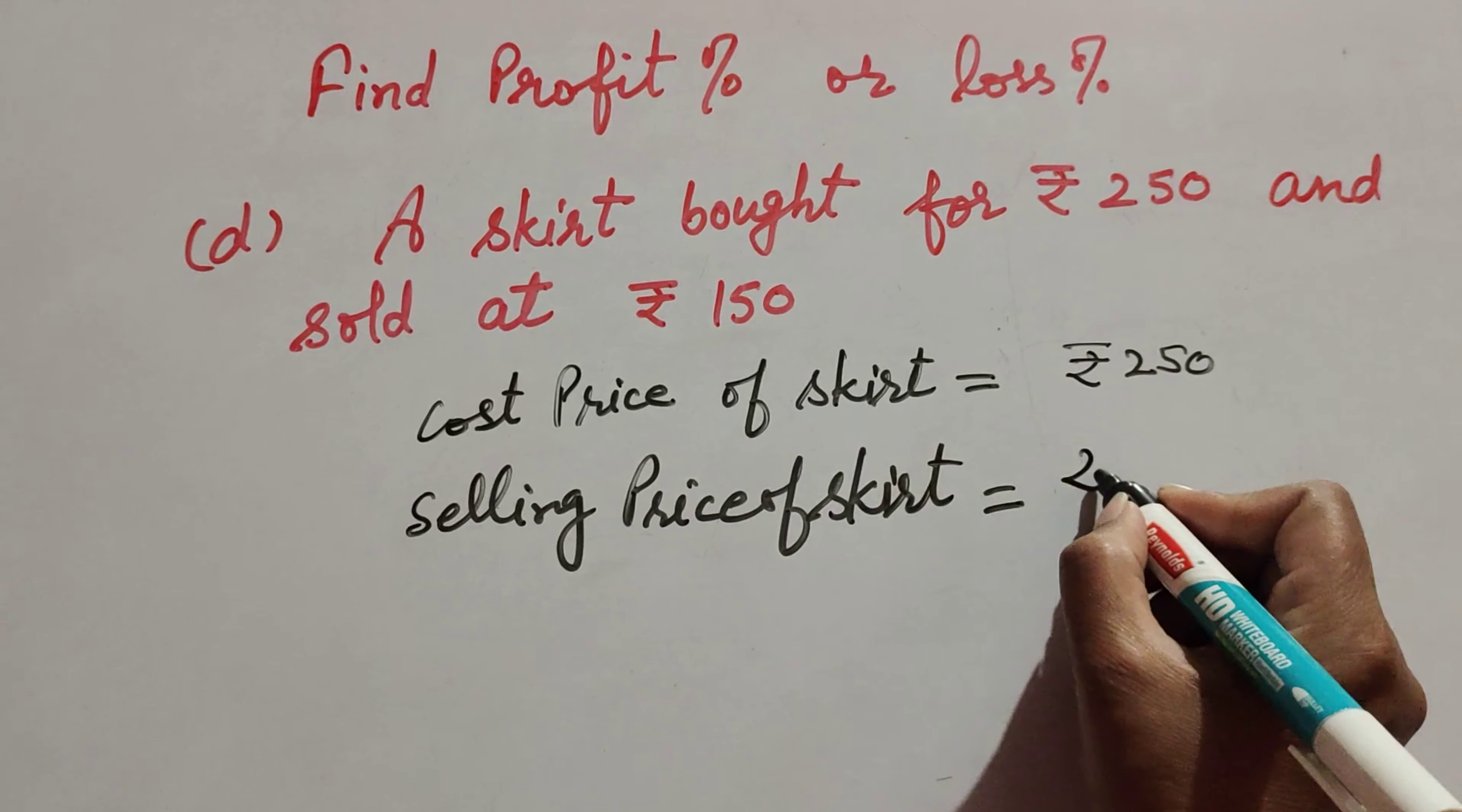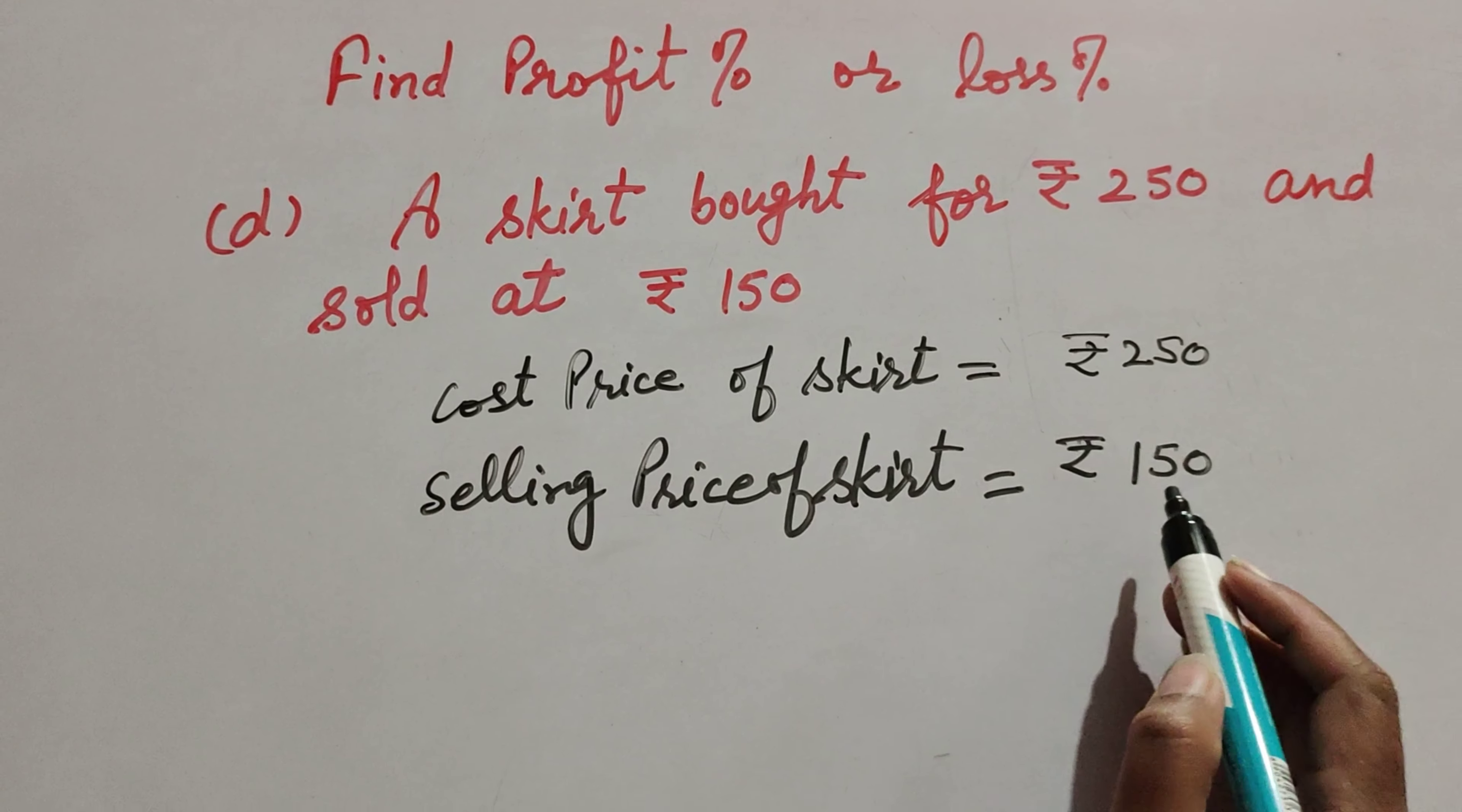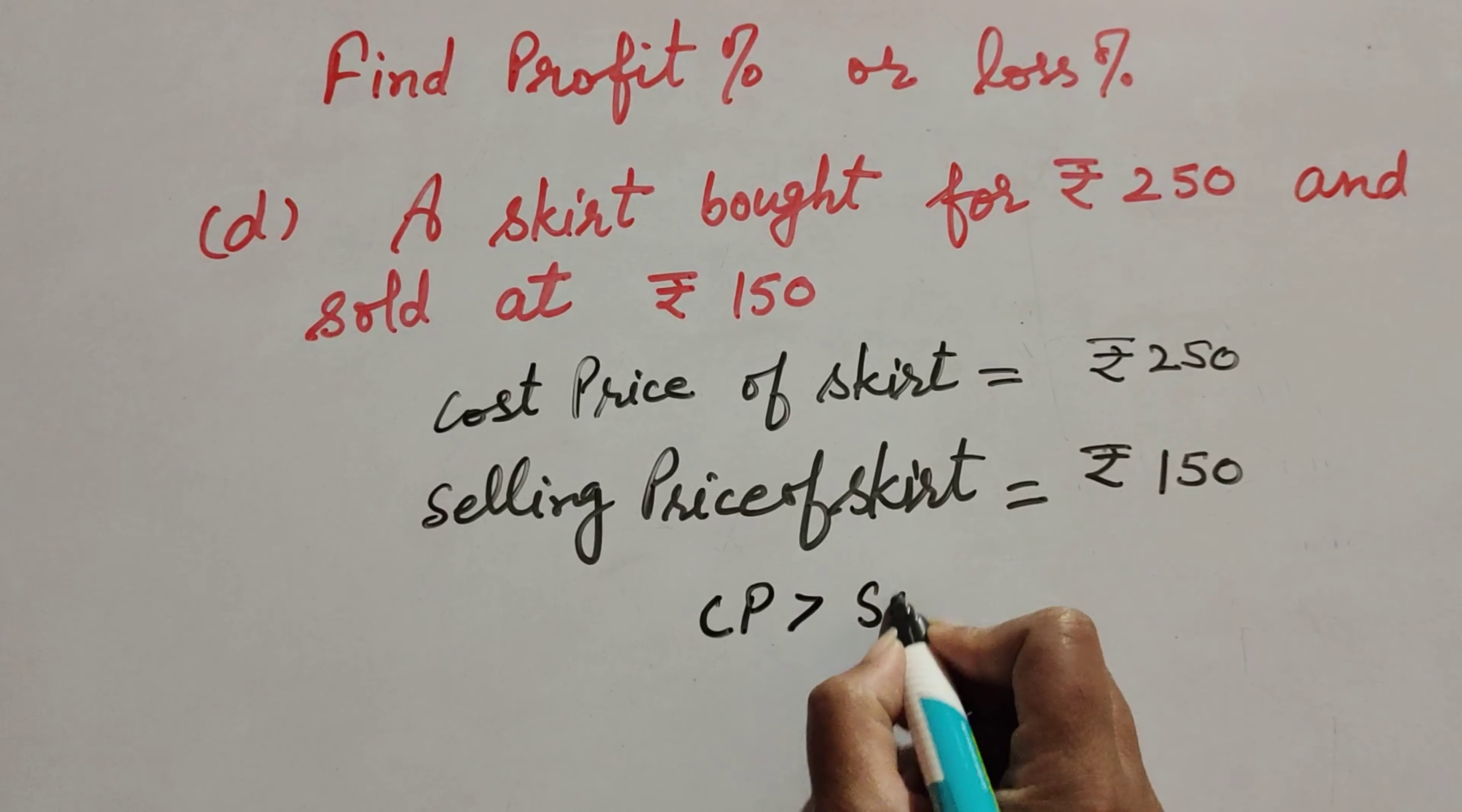So we find profit percent or loss percent. In this, selling price is 150, cost price is 250. So cost price is greater than the selling price. When cost price is greater than selling price, then we get loss.